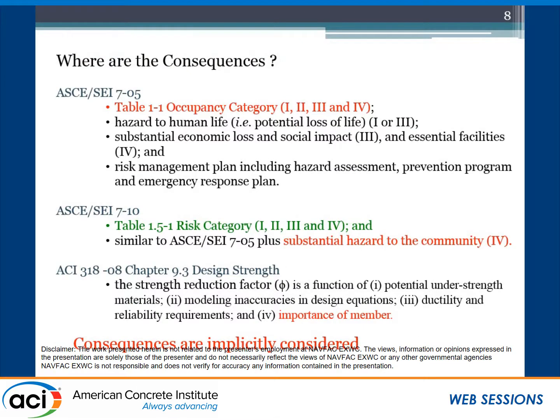All the criteria are reliability-based, because our current design is all reliability-based, not risk-based. Risk-based design is probability of failure times the consequence — that's an entirely different element. In the current code, this consequence element is addressed roughly through the occupancy category or risk category, and through certain ACI 318 importance factors for key members — for example, members that could cause progressive collapse. This addresses risk very roughly, not explicitly.